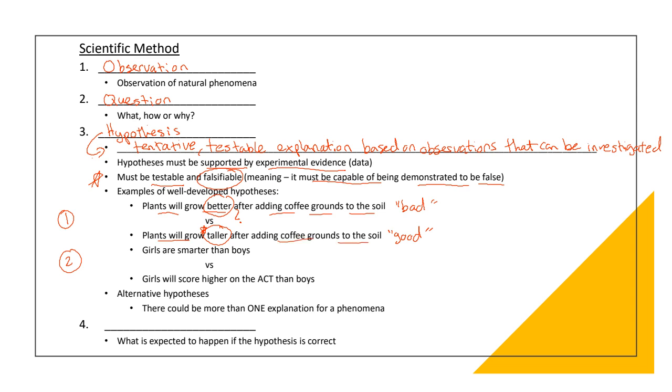Another example, girls are smarter than boys. Why is this a bad hypothesis? A poorly written hypothesis. Well, again, what is smarter? How do you quantify that? How do you define that? There's different types of smartness. Some people are book smart. Some people are street smart. Some people are socially smart. Some people are athletically smart. So there's different ways of evaluating smarter.